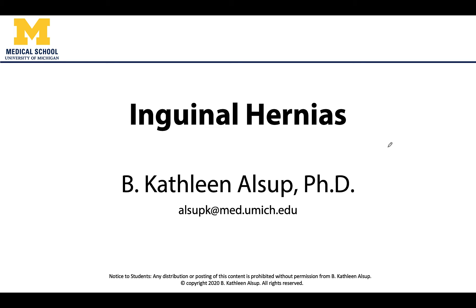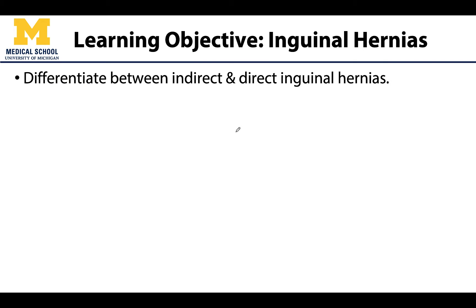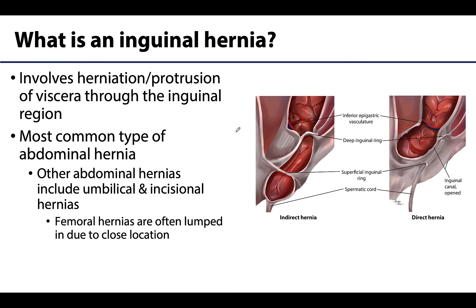Hello anatomy friends, this is Dr. Alsup, and in this video we will be discussing the anatomical considerations regarding inguinal hernias, with our major goal of being able to anatomically differentiate between an indirect and a direct hernia — the two major types of inguinal hernias. Inguinal hernias are protrusions or herniations of both parietal peritoneum and often viscera, such as portions of the small intestine, through a normal or an abnormal opening in the inguinal region.